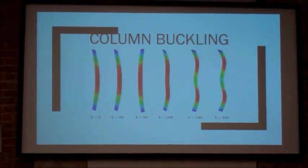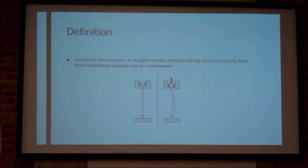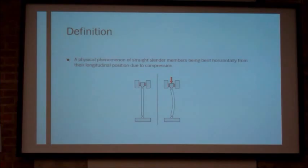My name is Michael Edge, and I'm presenting the topic of column buckling. Buckling is a physical phenomenon where slender members are bent horizontally from their longitudinal position due to compression, which you can see in the diagram here that it's bent horizontally from their support.